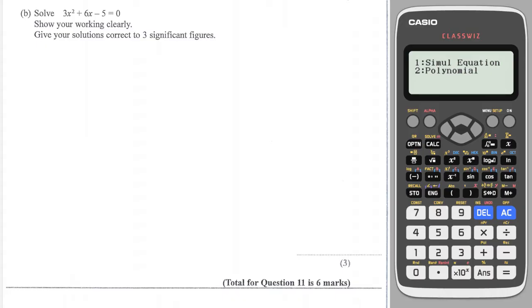Next question. And I can tell that factorising is not going to work here because it says give your answers correct to three significant figures. So if we can't factorise, it means we need to use the quadratic formula.